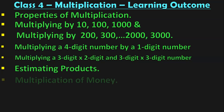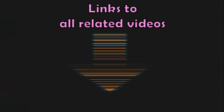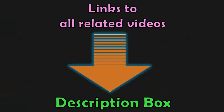Dear viewers, these are all the learning outcomes in class 4 under the topic multiplication, of which I have covered: properties of multiplication; multiplying by 10, 100 and 1000; multiplying by 200, 300 up to 2000, 3000; multiplying a 4-digit number by a single-digit number; multiplying a 3-digit by 2-digit number; 3-digit by 3-digit multiplication; estimating products; multiplication of money; and in this video, story sums applying multiplication. I have dealt with each of these topics in separate videos and links to all related videos are given below in the description box.